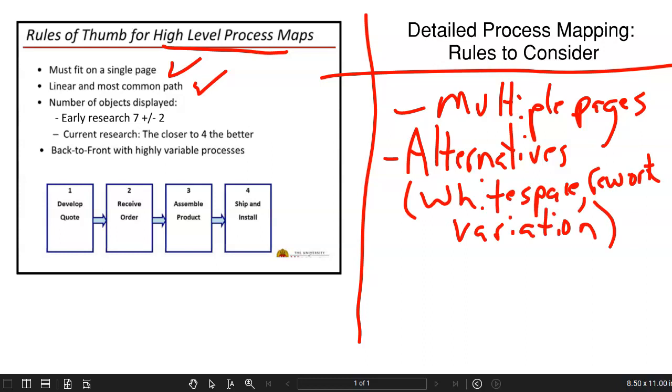Your detailed maps should include some sort of visual representation of the white space, the rework loops, all of the alternative paths that lead to increased variation, either upstream or down. High-level maps are going to have five to nine objects. Typically, a detailed map should be a full representation of the complexity of current state.